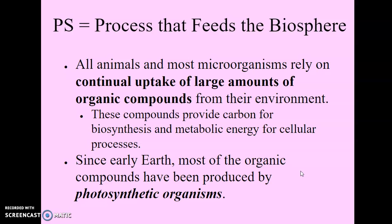An organism acquires these organic compounds it uses for energy and for carbon skeletons by one of two major modes: it can be either autotrophic or heterotrophic. Autotrophic means they are self-feeders and sustain themselves without eating anything derived from other living beings. They get their energy from sunlight and produce their organic molecules from CO2 and other inorganic raw materials obtained from the environment, making them the ultimate source of organic compounds for all other non-autotrophic organisms.